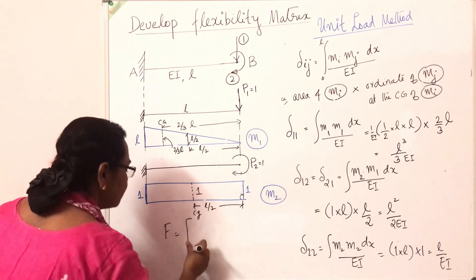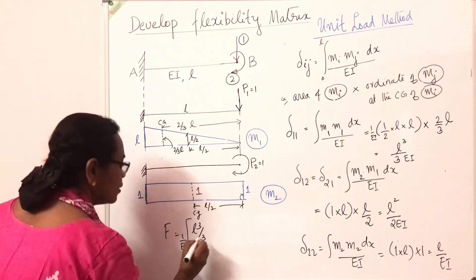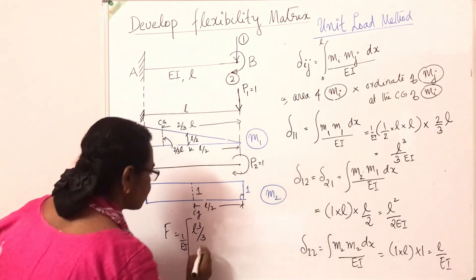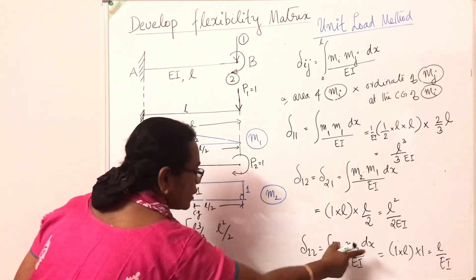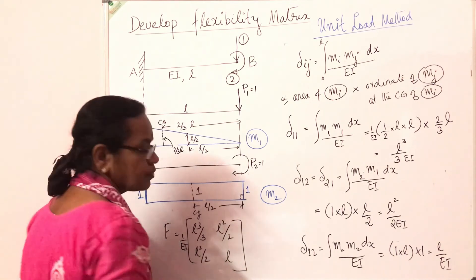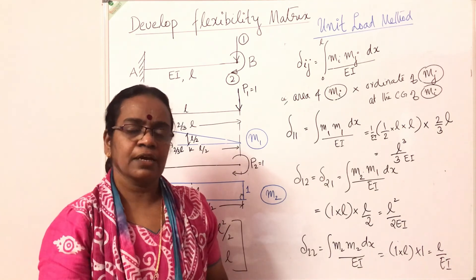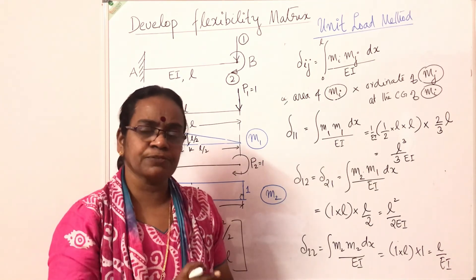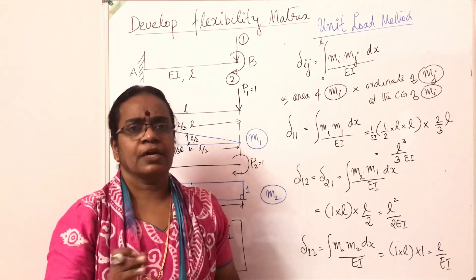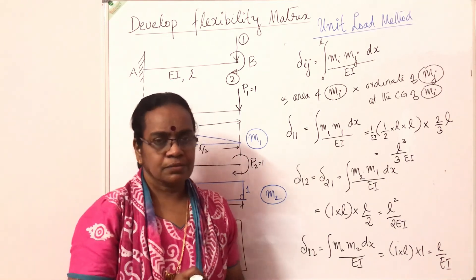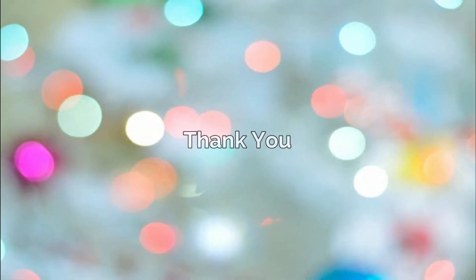We can now write the complete flexibility matrix: F = (1/EI) × [[L³/3, L²/2], [L²/2, L]], which matches what we obtained earlier. The unit load method with graphical integration is a very easy method and can be adopted even for beams with irregular loadings or simply supported beams with any eccentricity. Thank you.